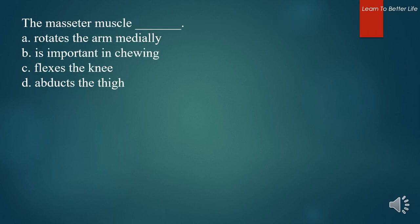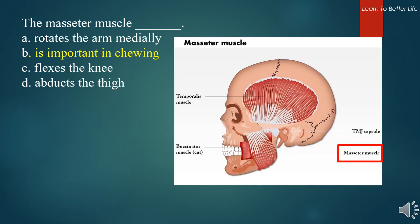The masseter muscle. A. Rotates the arm medially. B. Is important in chewing. C. Flexes the knee. D. Abducts the thigh. The answer is B. Is important in chewing. The masseter is one of the muscles of mastication. It is a powerful superficial quadrangular muscle originating from the zygomatic arch and inserts along the angle and lateral surface of the mandibular ramus. The masseter is primarily responsible for the elevation and some protraction of the mandible.